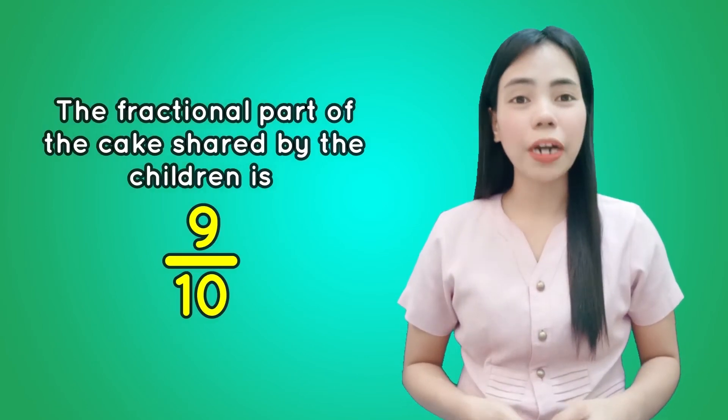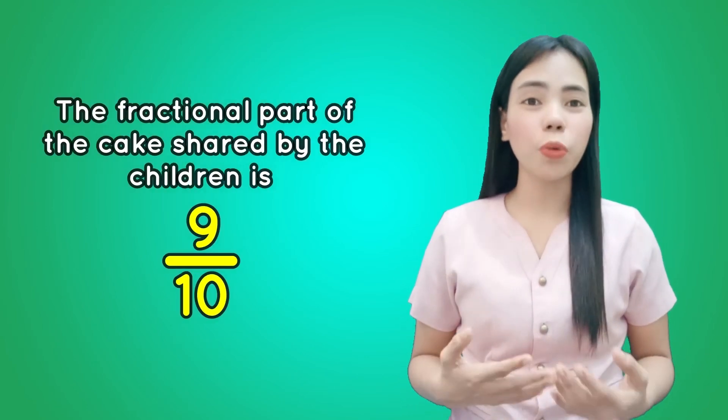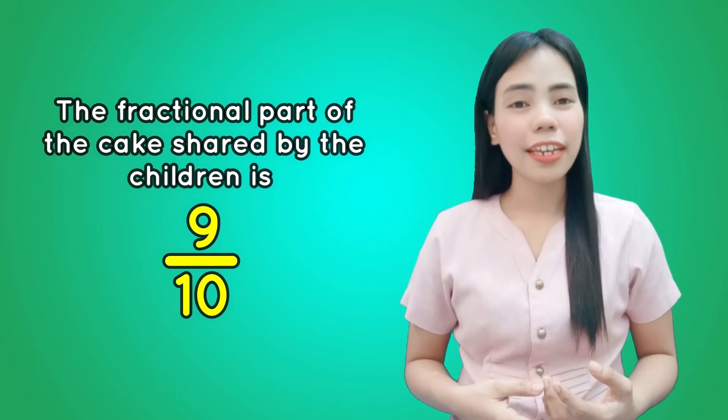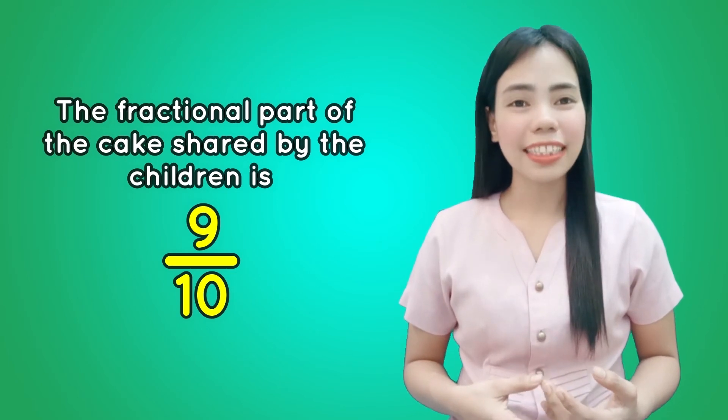What did you observe after I used 3 different solutions? Whatever strategy is used to find the fractional form of 9 tenths, we always come up with the same answer. Therefore, the fractional part of the cake shared by the children is 9 tenths.